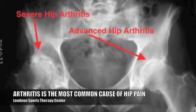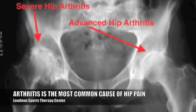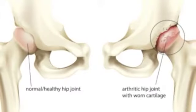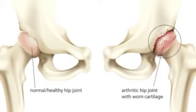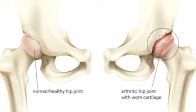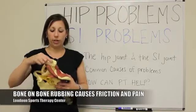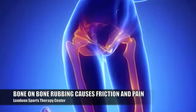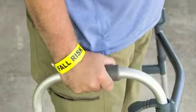The biggest source of hip pain is osteoarthritis. When there's a degeneration of the cartilage around the femur as well as the lining of the socket, as that degeneration occurs, there's more bone-on-bone rubbing, which causes a lot of friction and pain.